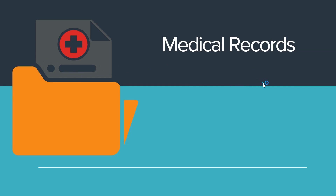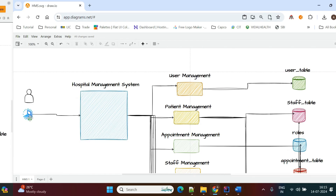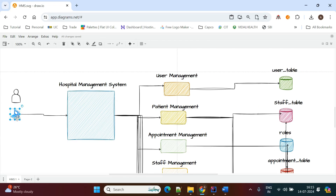Now we can see the flow — how this flow will work from the application. The user is the authorized person who has access to this application and can perform all operations from it.